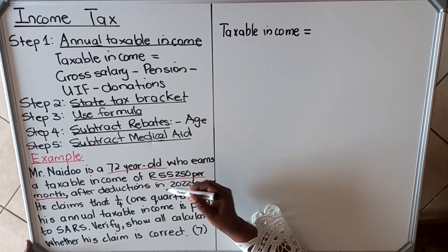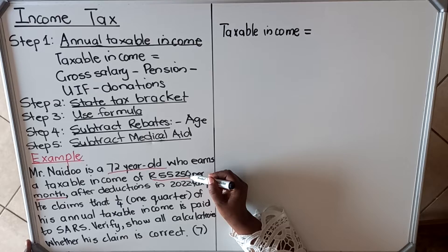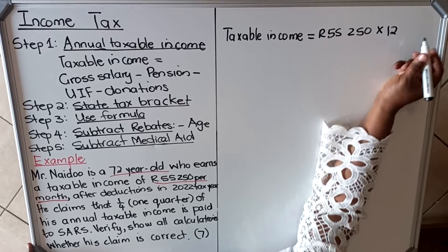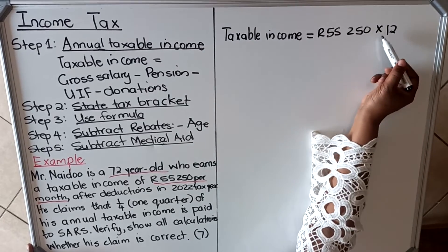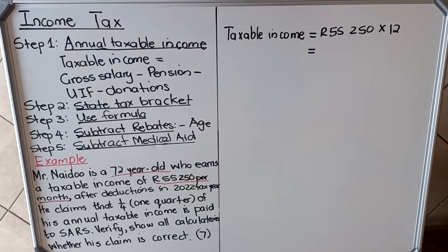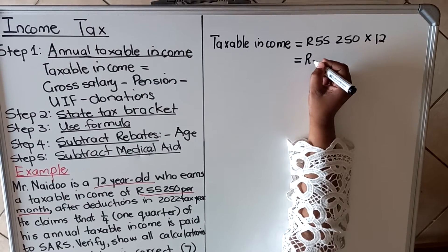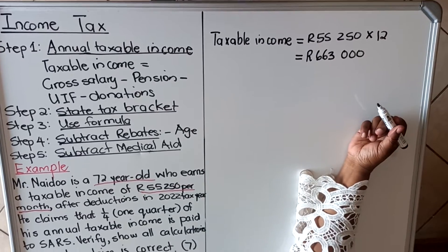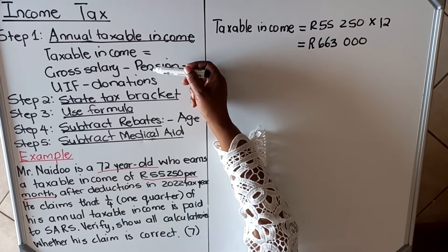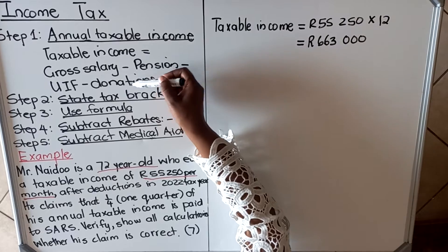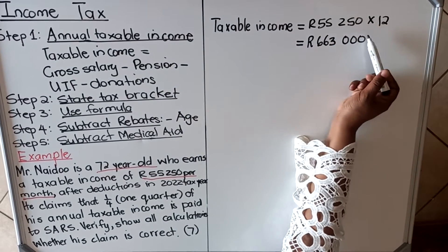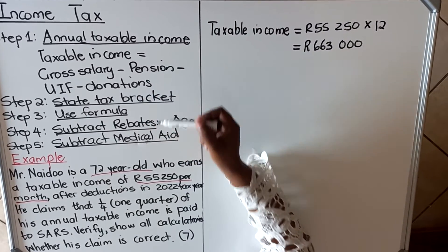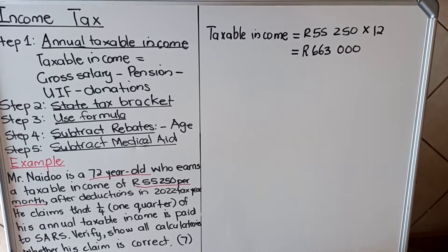Step one: calculate the taxable income. They told us it's R55,250 per month, so we calculate 55,250 × 12 because we need the annual taxable income. That gives us R663,000 — this is the taxable income per year. In this question we don't subtract pension, UIF, or donation because they already gave us the taxable income after those deductions.